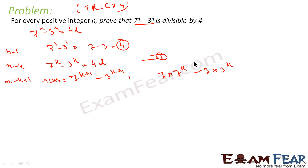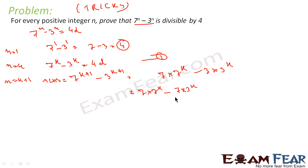We can do some subtraction and addition to convert this into the desired form. From 7 times 7^k, if we subtract 7 times 3^k, then 7 times (7^k minus 3^k) equals 7 times 4d. Since we are subtracting, we have to add back 7 times 3^k.